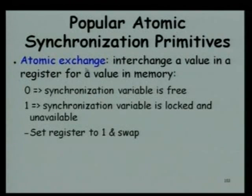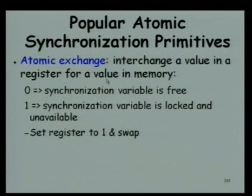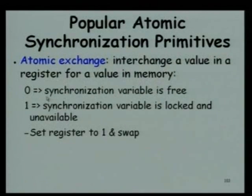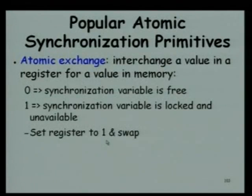For example, in an atomic exchange, we interchange the value in a register for a value in memory. The processor has one value in the register, gets the value at a specific memory location, and stores its register value there in a single atomic operation. If after the atomic exchange the register contains 0, the lock is available; if it is 1, somebody has locked it. To set the lock, set the register to 1 and swap — if 0 comes back, the lock was available.